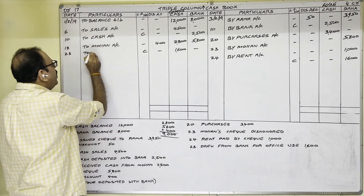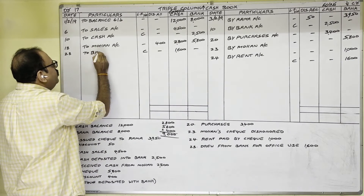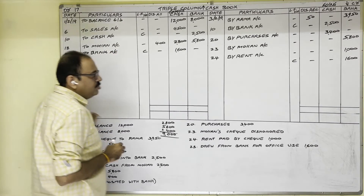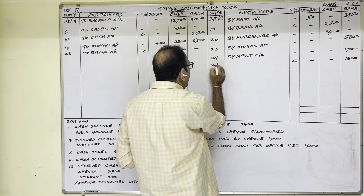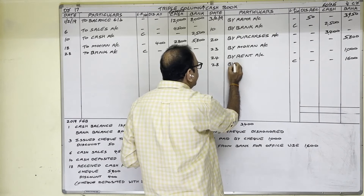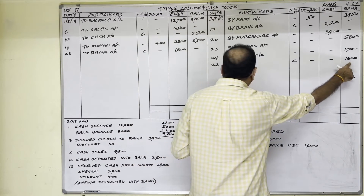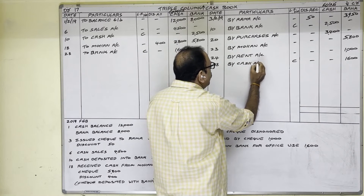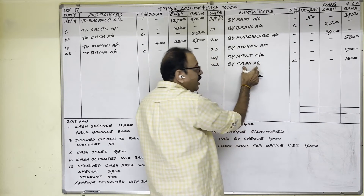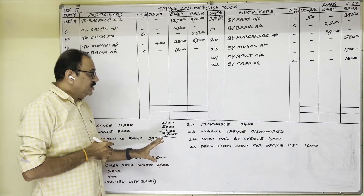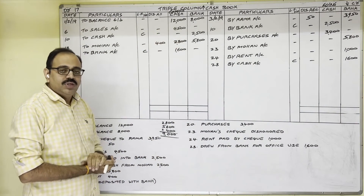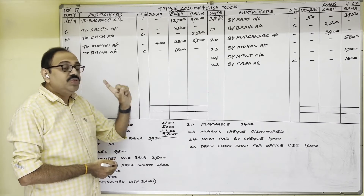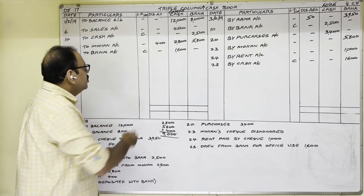For the contra entry of drew from bank: where we wrote the amount in the bank column, in particulars write 'by cash account'. Similarly, where we wrote the amount in the cash column, write 'to bank account'. All transactions have now been posted in the account.